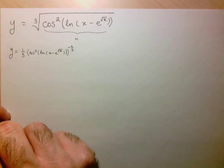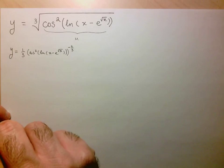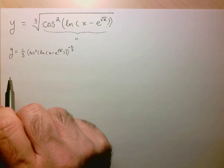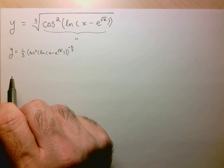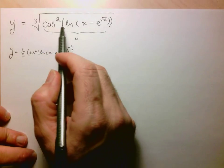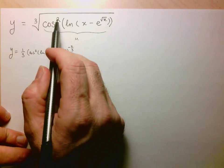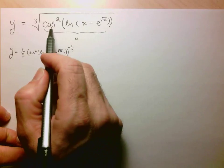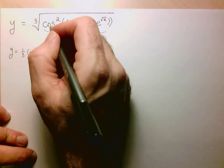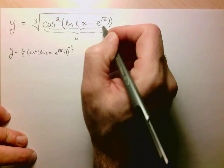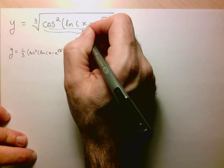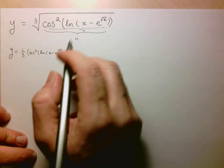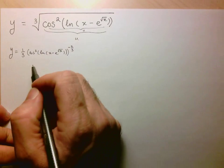Now I have to take the derivative of this u with respect to x, but what I have to notice here is I have this cosine expression that is squared. Remember that's what that exponent 2 represents, is this whole expression here being squared. So now this whole expression, the cosine of the logarithm, ends up being my v.